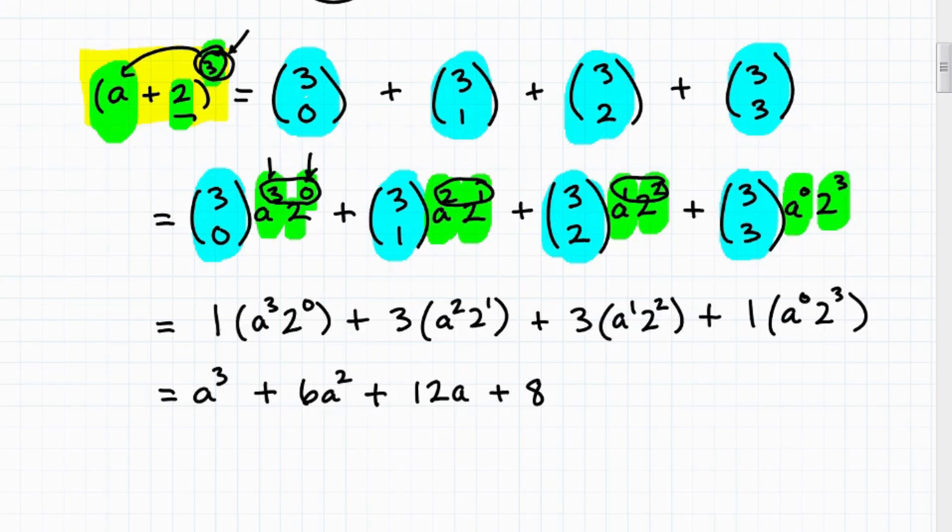Now, just to break away here for a second, we always know that our very first term is going to be this guy to this power. So this is going to be A cubed. And then our very last term will always be this, this part of the binomial cubed. So in this case, it's two cubed or eight. So you can always get the two extremes of the answer, but I want to conceptually write it out for you so you see what's going on with the pattern of the binomial theorem.